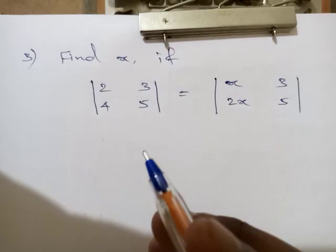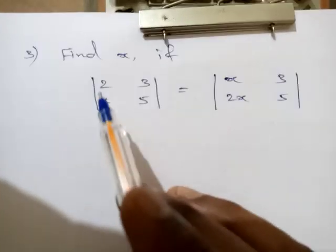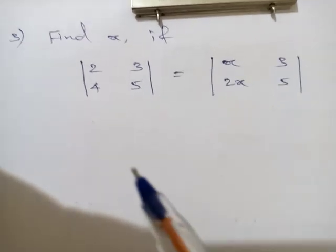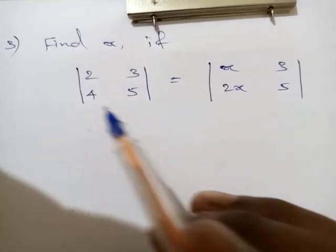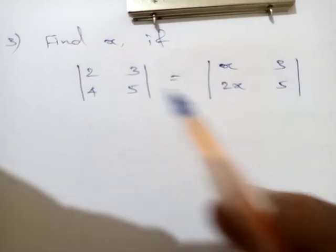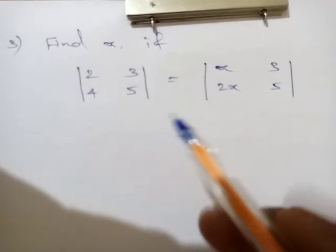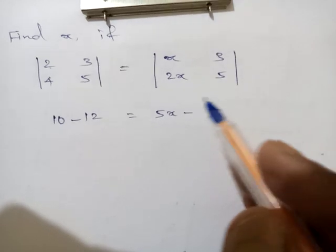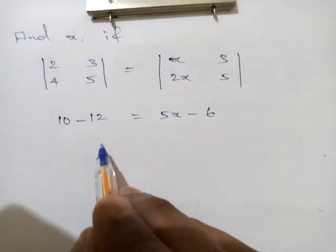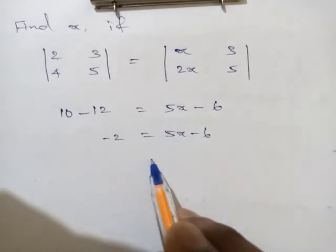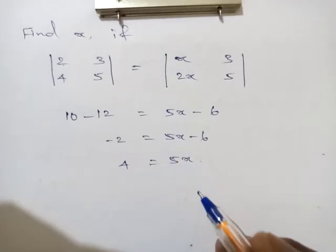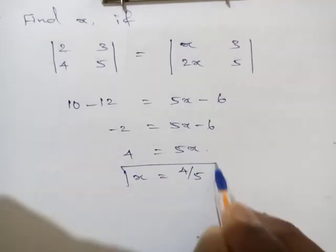The next problem. Find the value of x if the determinant of [2, 3; 4, 5] equals the determinant of [x, 3; 2, 5]. This is not a matrix equality — we must compute each determinant. So 2×5 − 4×3 = 10 − 12 = −2, and 5x − 2×3 = 5x − 6. So −2 = 5x − 6, giving 5x = 4, so x = 4/5.